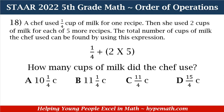Question 18 says: A chef used 1/4 cup of milk for one recipe. Then she used 2 cups of milk for each of 5 more recipes. The total number of cups of milk the chef used can be found using this expression: 1/4 + (2 × 5). How many cups of milk did the chef use? A: 10 and 1/4 cups? B: 11 and 1/4 cups? C: 11/4 cups? Or D: 15/4 cups?